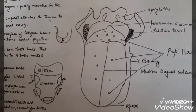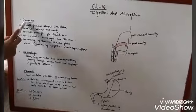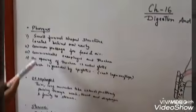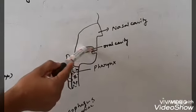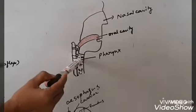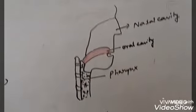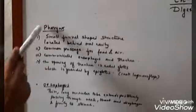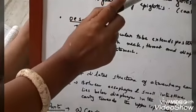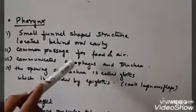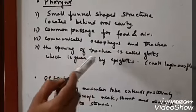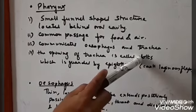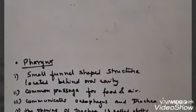The next part is the pharynx. The pharynx is a small funnel-shaped structure located behind the oral cavity. As you can see in my diagram, the red portion is the oral cavity, the nasal cavity, and behind the oral cavity is the pharynx. It is a very important structure because it is the common passage for both food and air. It communicates the esophagus — the food pipe — as well as the trachea — the windpipe.